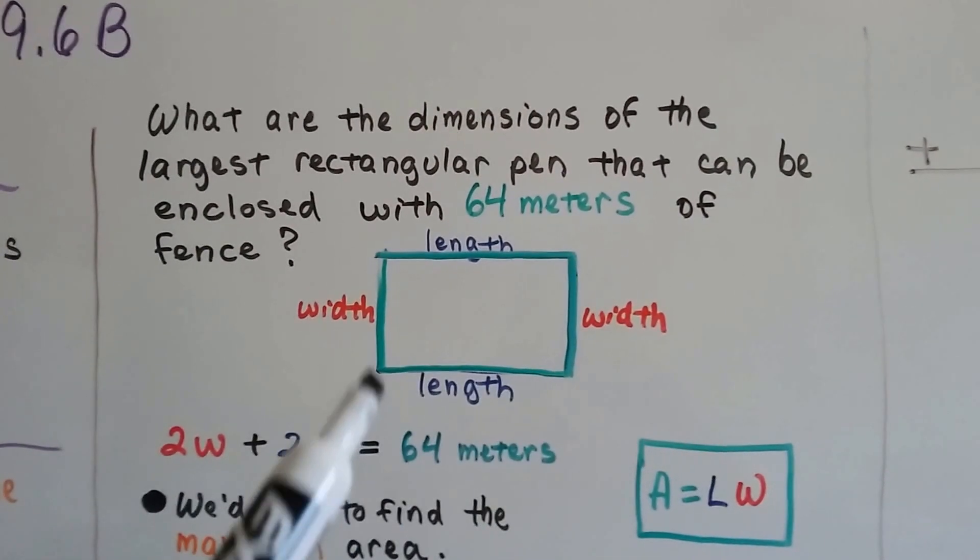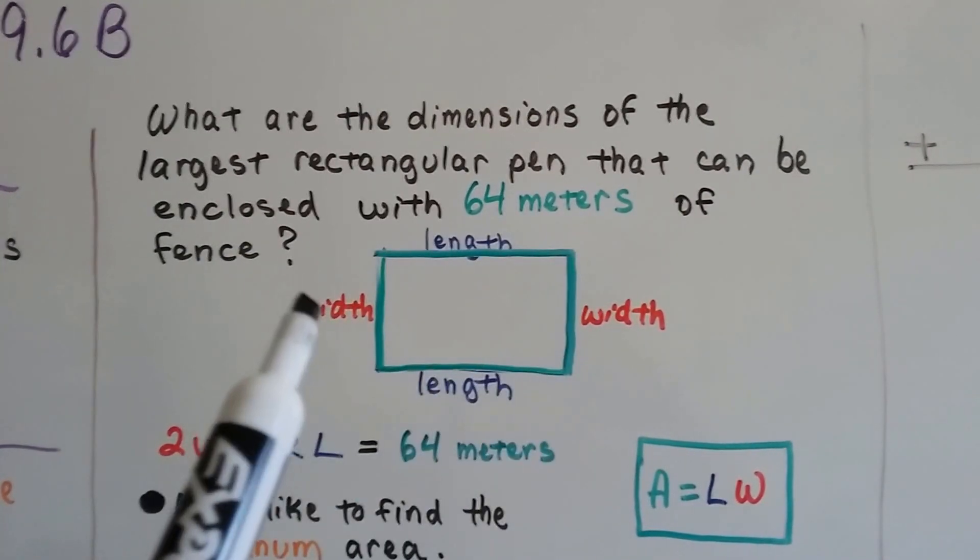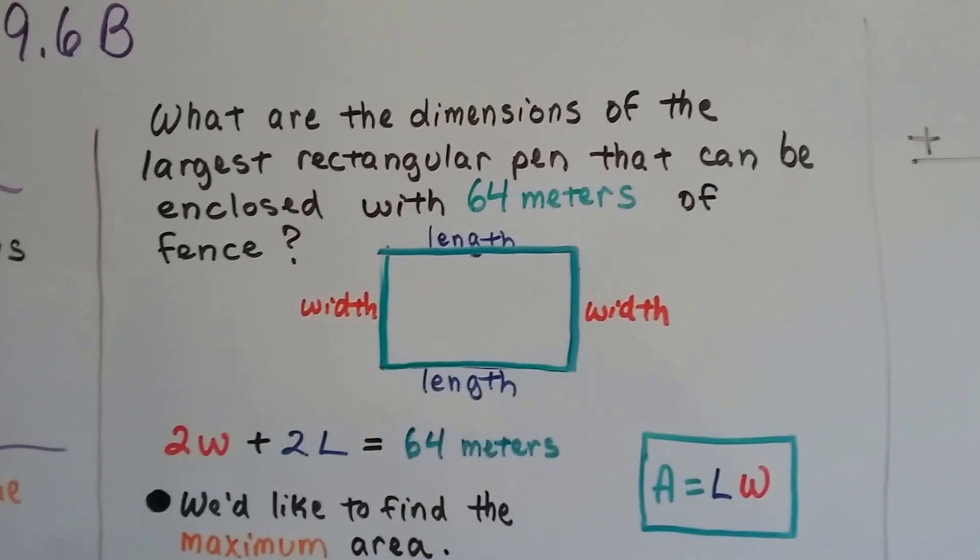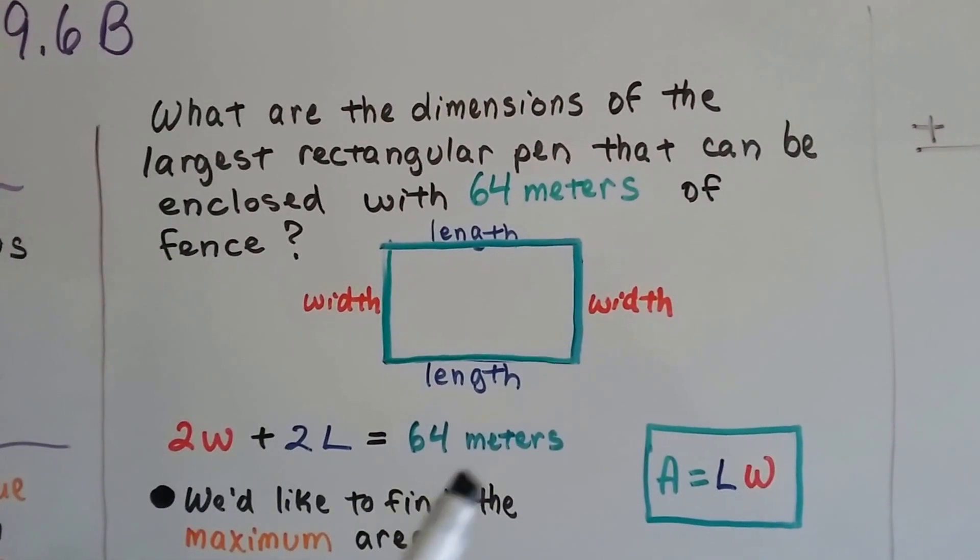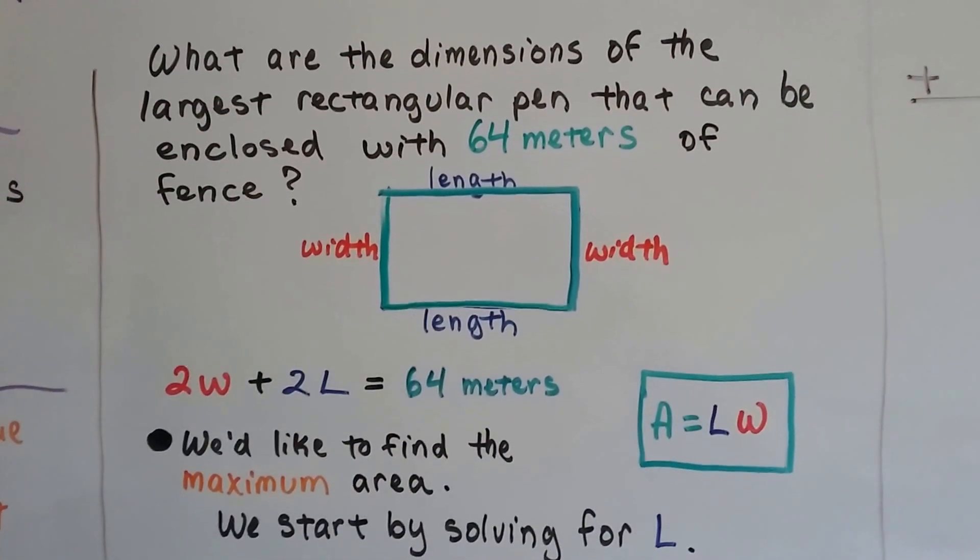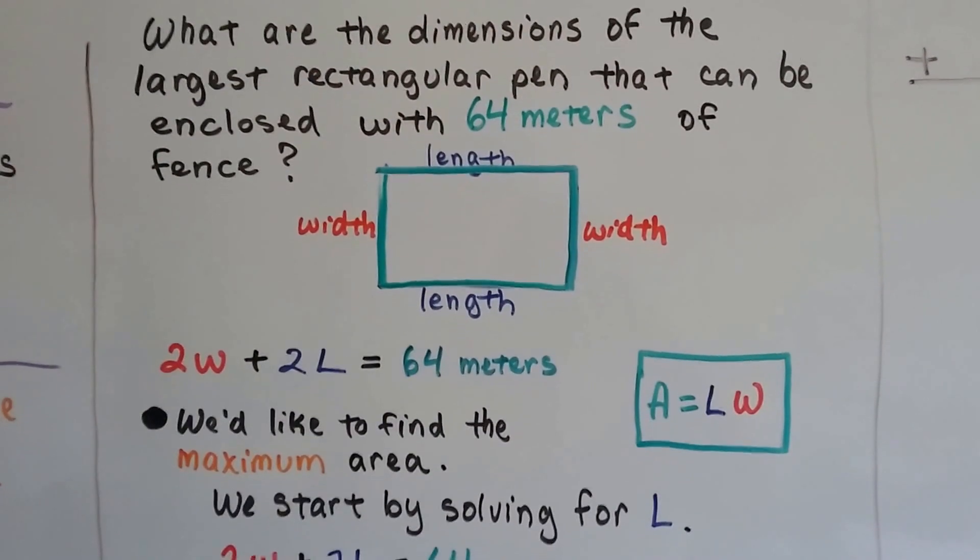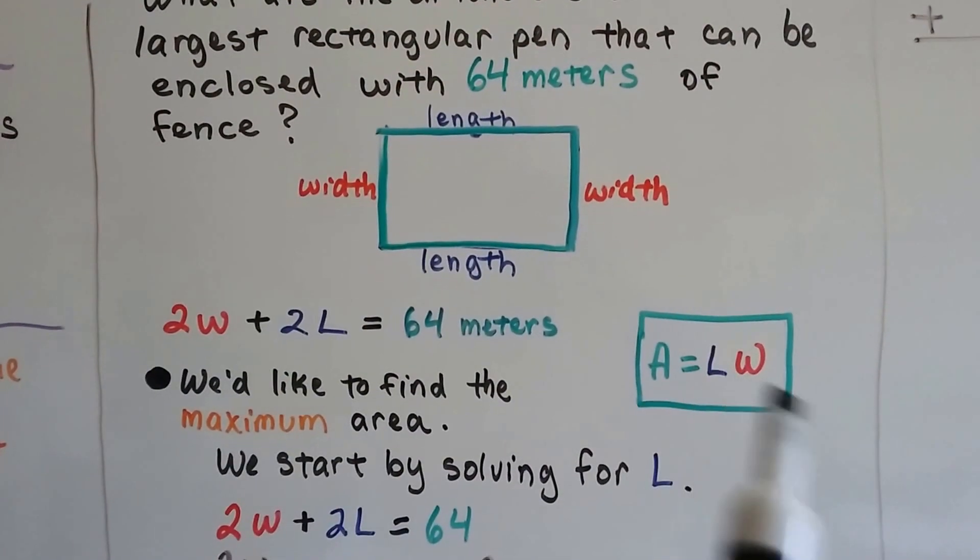We have 64 meters of fence that can go around this perimeter. We have a width here and here, a length here and here. So that means 2W + 2L = 64 meters of fence. We want to find the maximum area, the largest rectangular pen. Area is length times width.